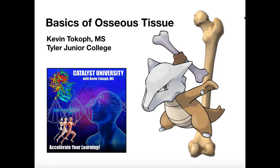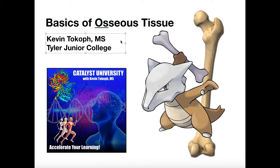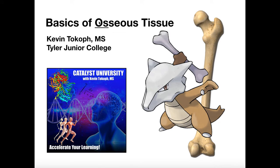We're going to start a playlist here where we're going to talk about the physiology of osseous tissue. Now osseous is a fancy term for bone. Generally when you see something that has the prefix 'os', it's referring to bone. Osseous means bone, so that's what we're going to be looking at — the skeletal system. It's very useful to know that osseous means bone because any time we have something in physiology that starts with 'os', it's generally going to be referring to something about bone.